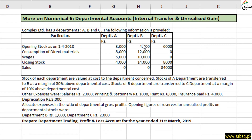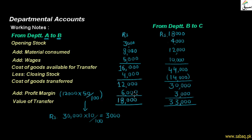First, we will calculate the cost of department A. After that, we look at the cost of department B. The opening stock was 4,000, the material used was 12,000, and wages and labor were paid at 10,000, making the total cost of department B equal to 44,000.